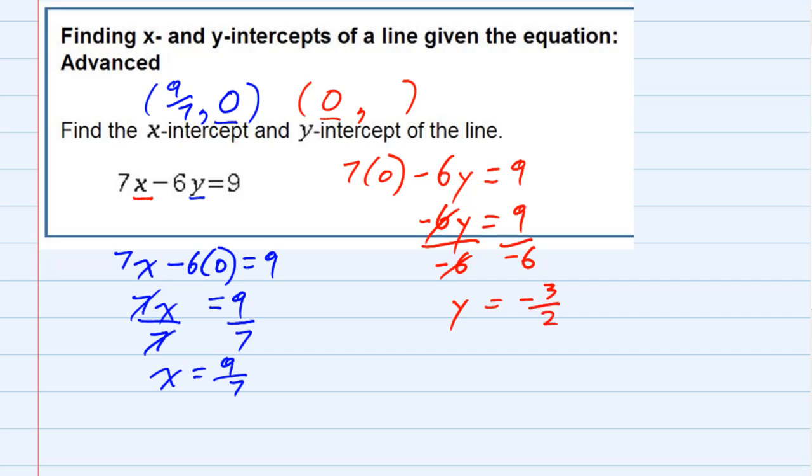Substituting that back in for my coordinate, negative 3 halves. I've got two parts of my solution. The x-intercept is this coordinate pair, and the y-intercept is this coordinate pair.